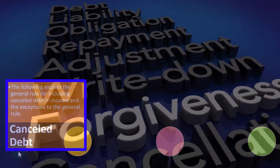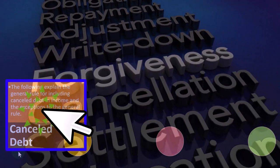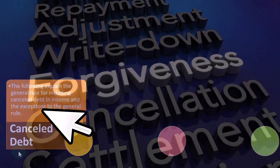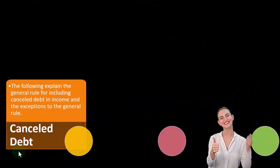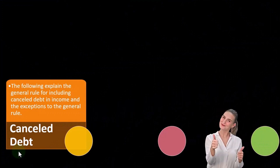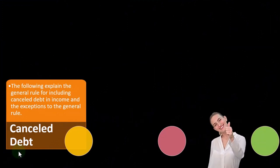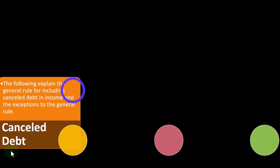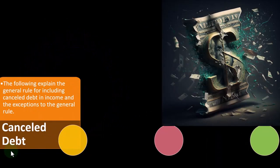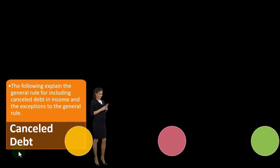Canceled debt: the following explains the general rule for including canceled debt in income and the exceptions to that rule. Usually, if you owed somebody money and they say you no longer owe them, that's basically income — because it's similar to them giving you the money and then you paying off the debt with it.